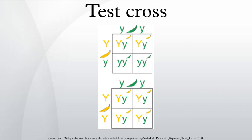Test crosses involve breeding the individual in question with another individual that expresses a recessive version of the same trait. Analyzing the proportions of dominant and recessive offspring determines if the individual in question is homozygous dominant or heterozygous. If all offspring from the test cross display the dominant phenotype, the individual in question is homozygous dominant.